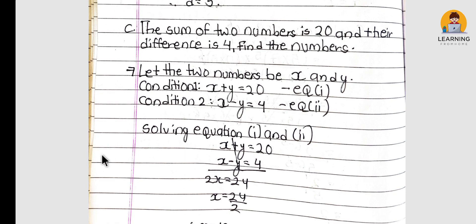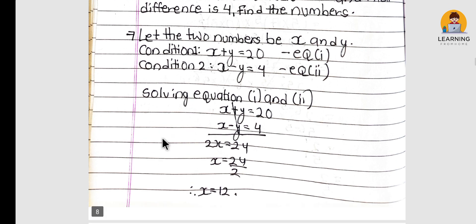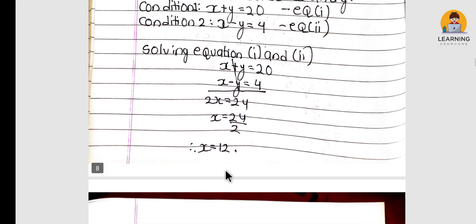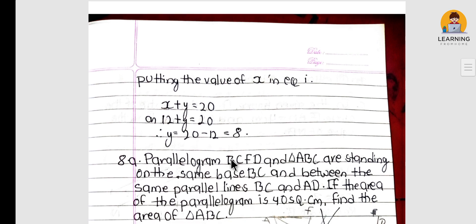The sum of two numbers is 20 and their difference is 4. Find the numbers. Let the numbers be x and y. So x + y = 20 and x − y = 4. Solving equations 1 and 2, x = 12. Putting the value of x in equation 1, y = 8.